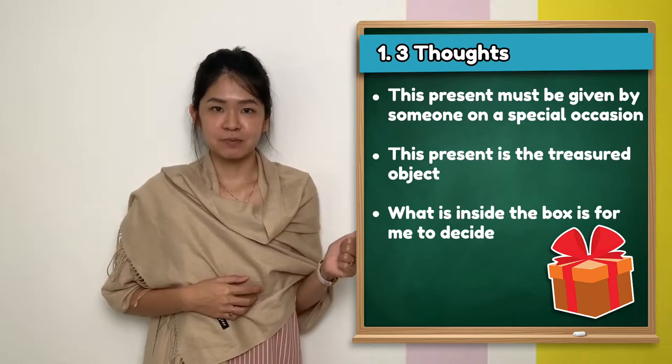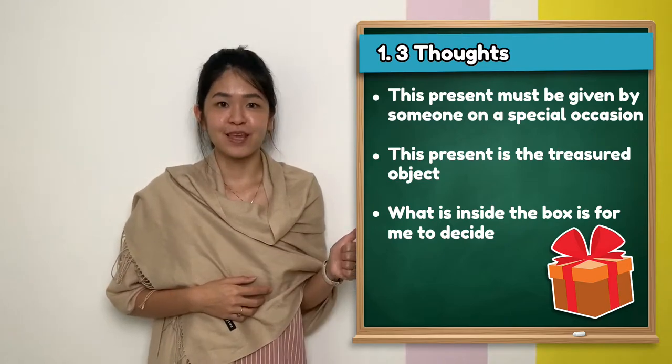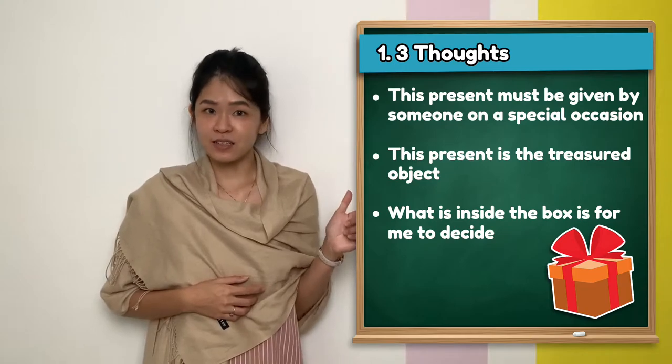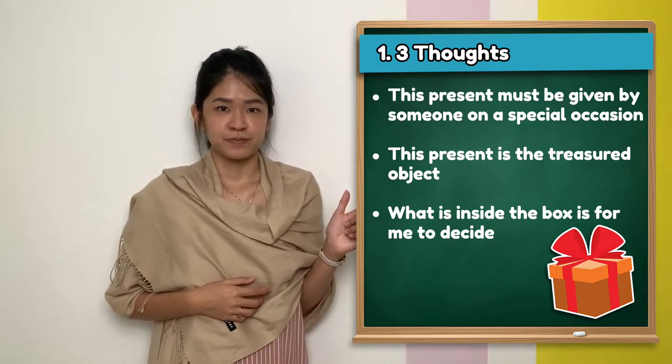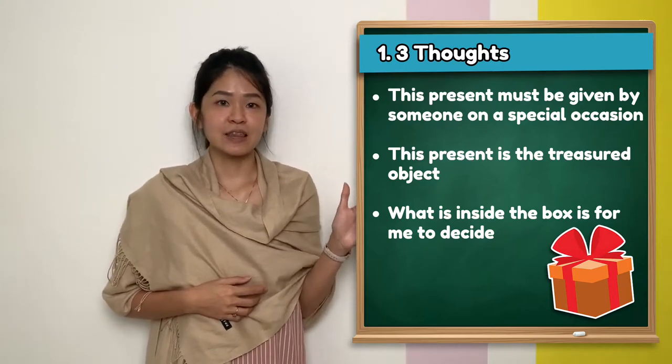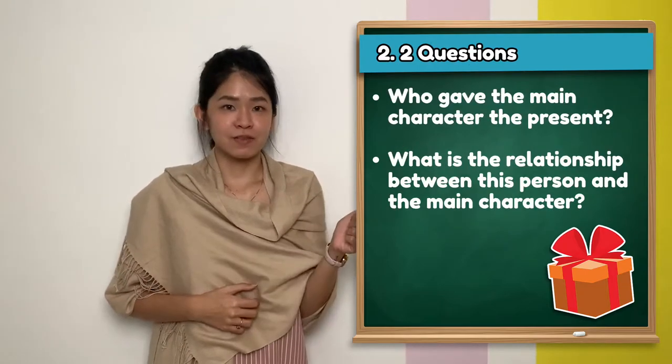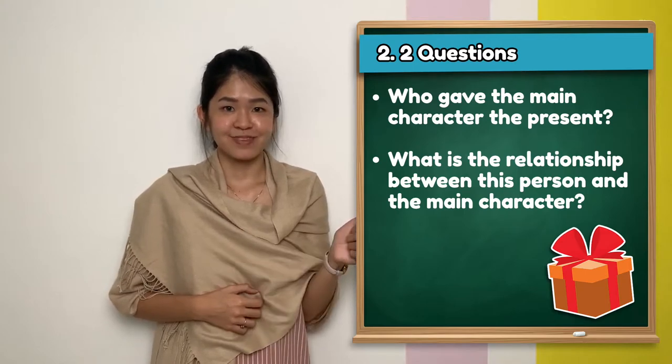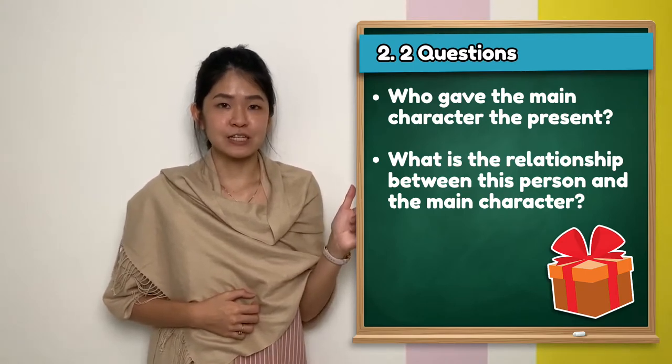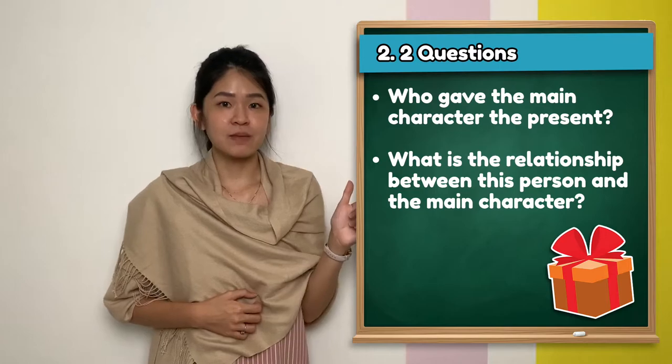This present must be given by someone on a special occasion. This present is the treasured object. What is inside the box is for me to decide. My 2 questions will be: Who gave the main character the present? What is the relationship between the person and the main character?